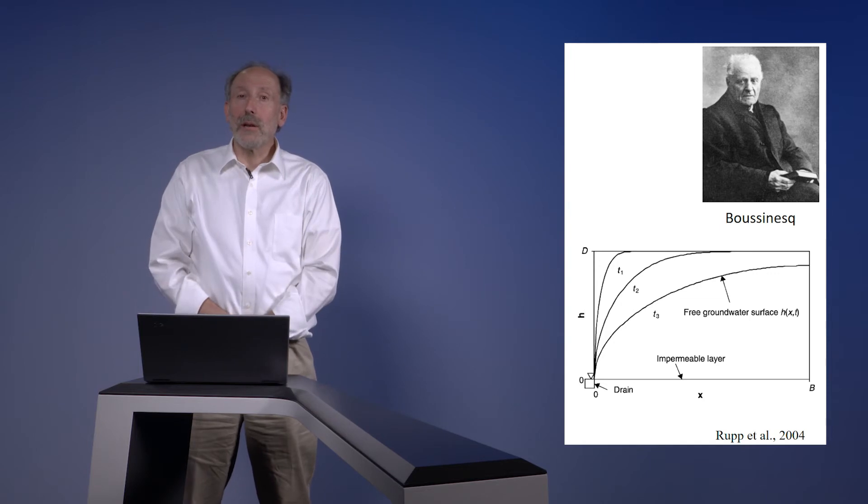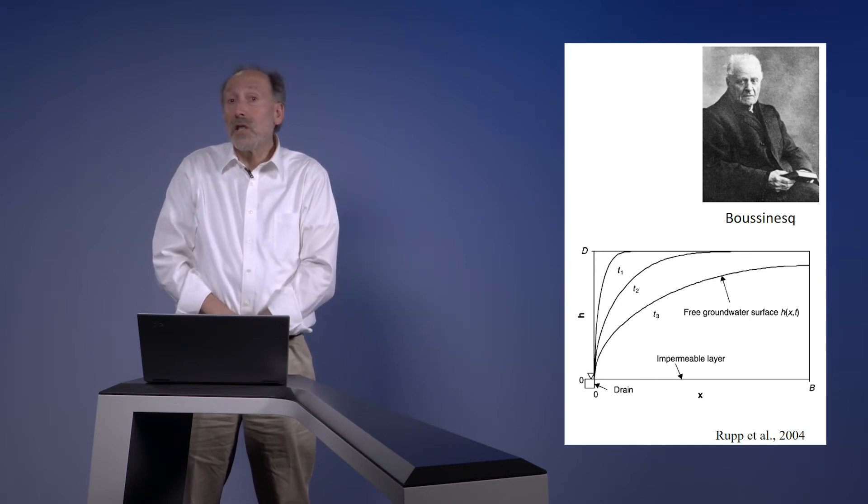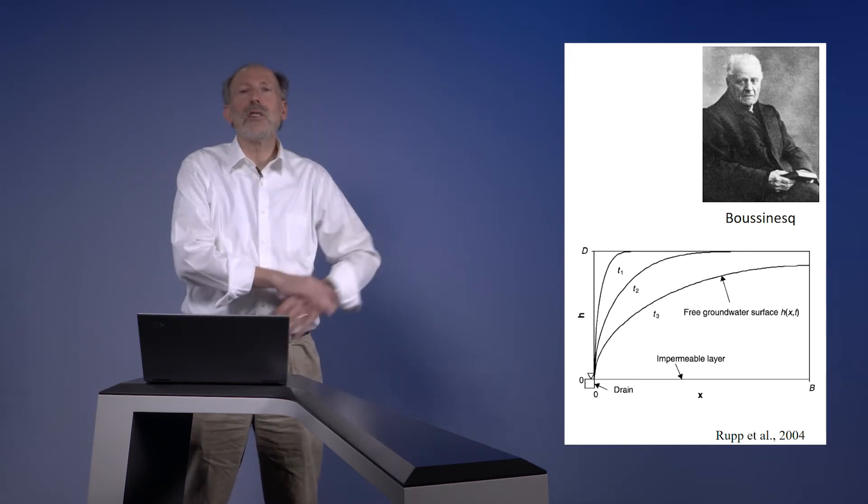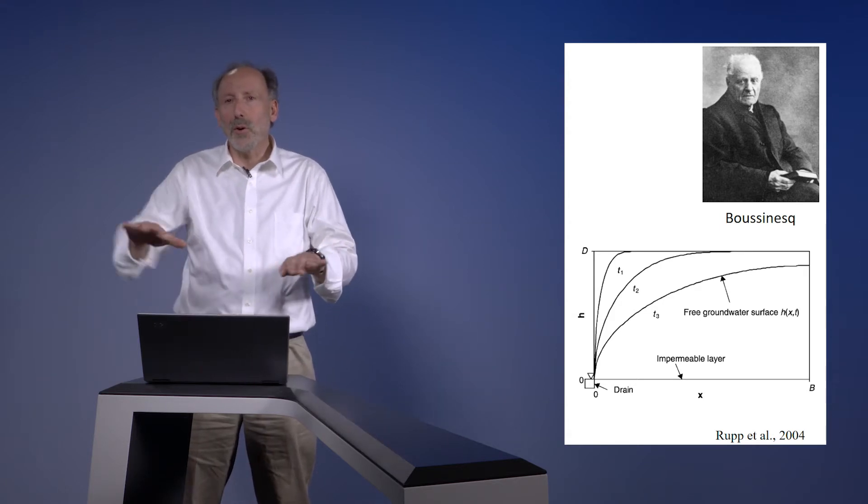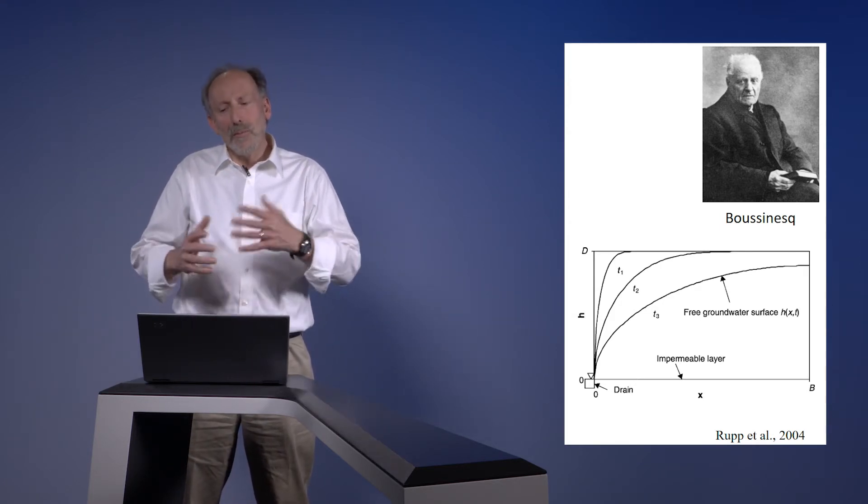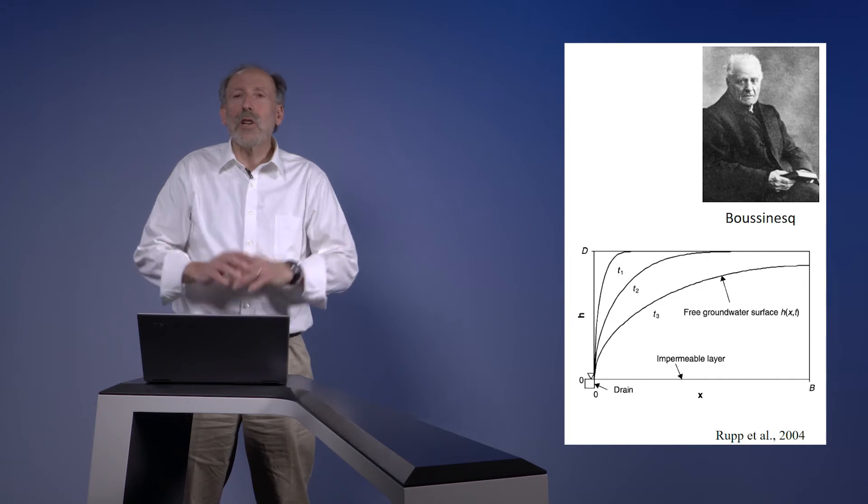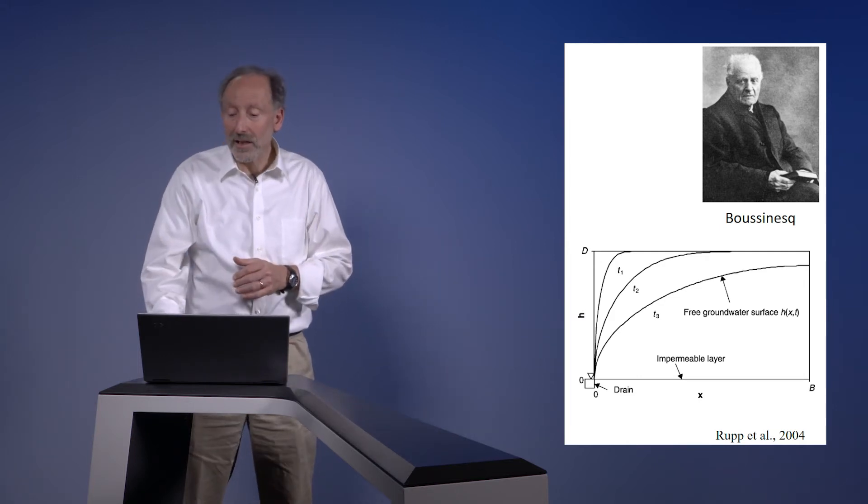This turned out to be a very successful analysis, which we still use to understand the recession analysis of rivers bordering aquifers. And so, as early as 1877, we'd already started to see some application to unsaturated systems.